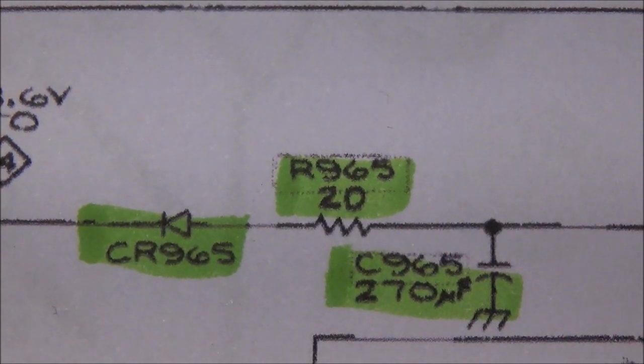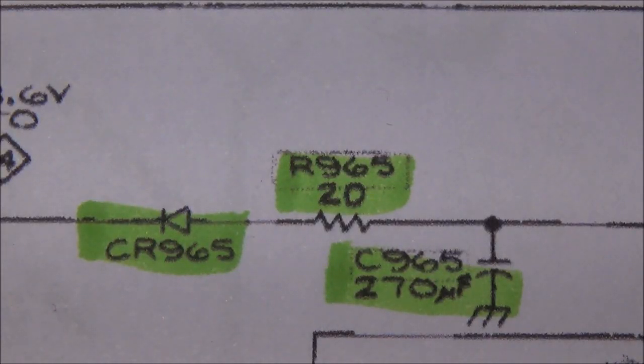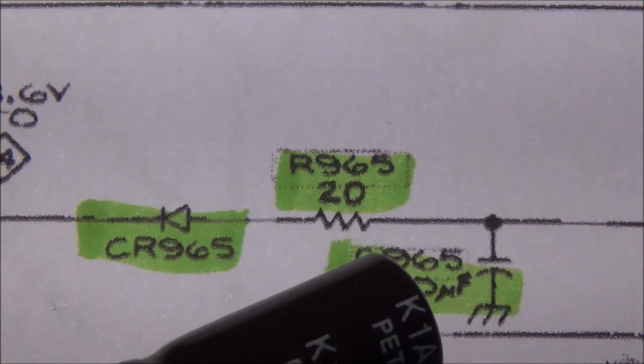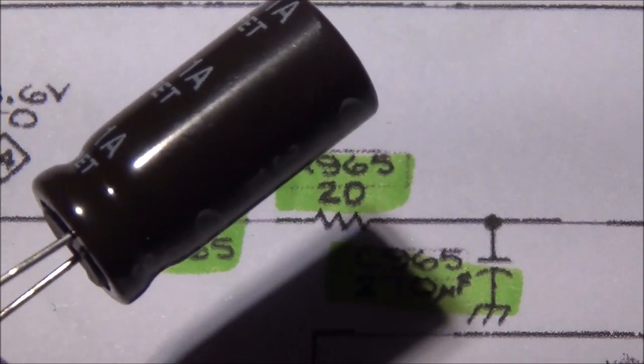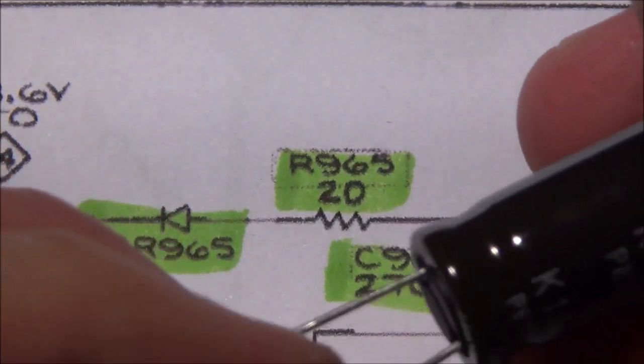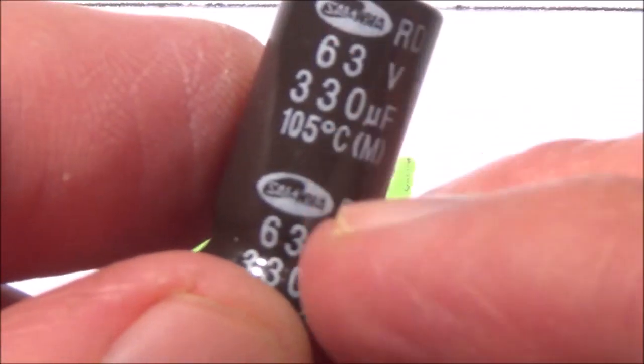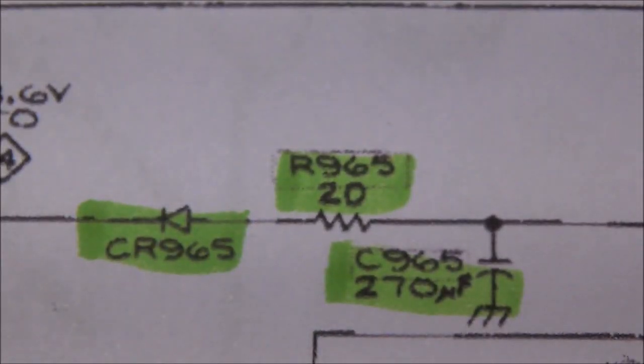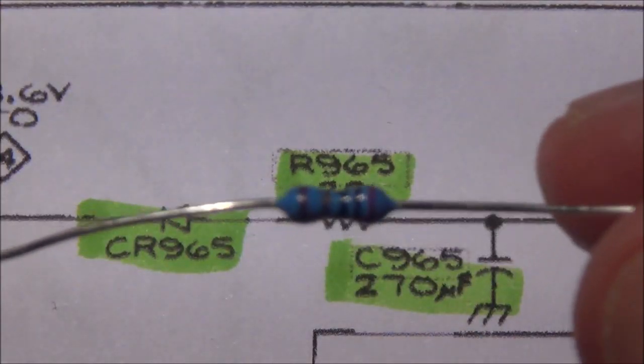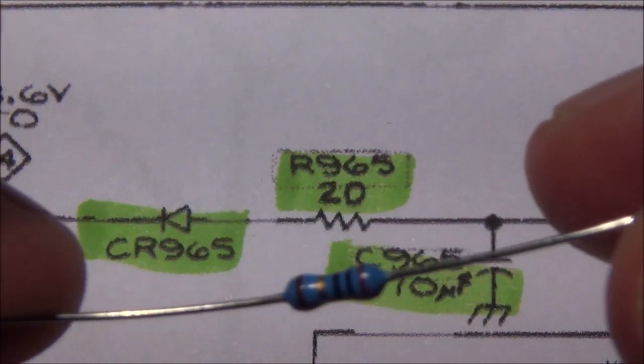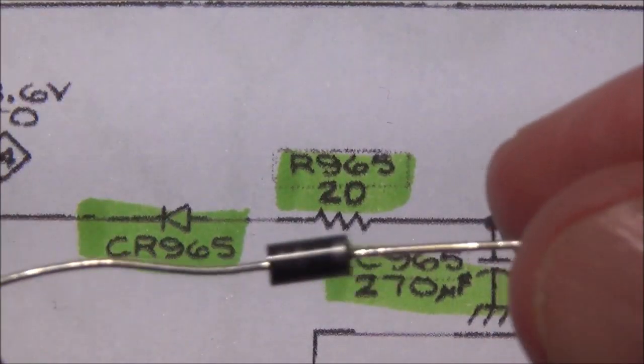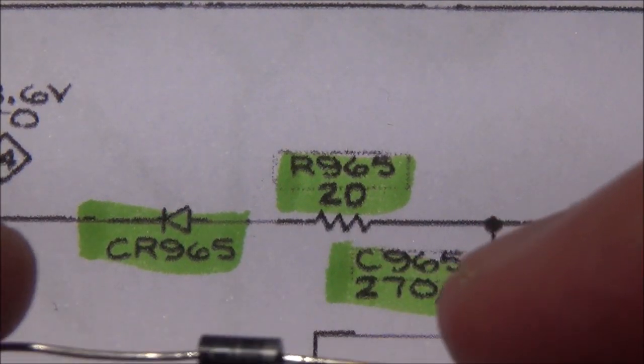Also the fourth component, I forgot to mention, is this little fan I bought. The electrolytic capacitor I ended up buying is 63 volts, 330 microfarads, a little bit larger, and it is a high temperature capacitor, 105 degrees centigrade. I got a half watt 20 ohm resistor, and I took one diode I had laying around, this is a 1N4007.